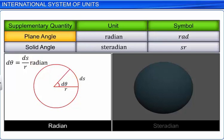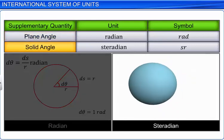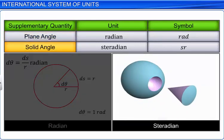Solid angle is defined as the ratio of the intercepted area of the spherical surface described about the apex O as the center to the square of its radius R and is measured in steradian.